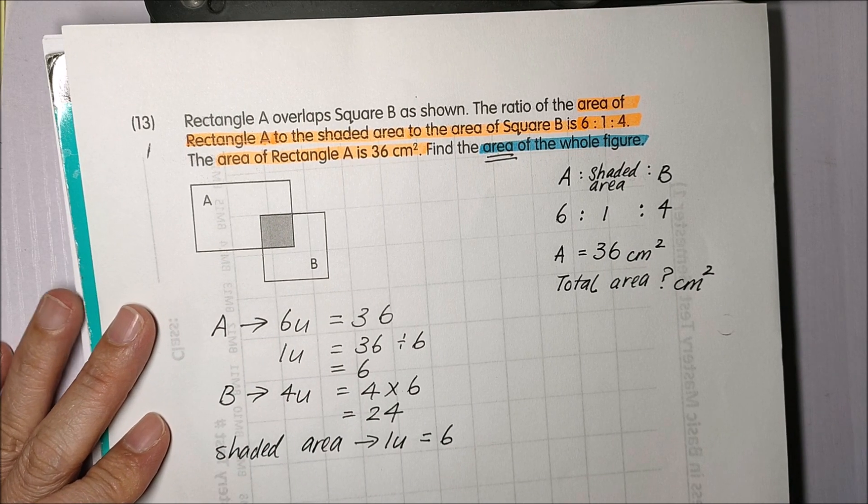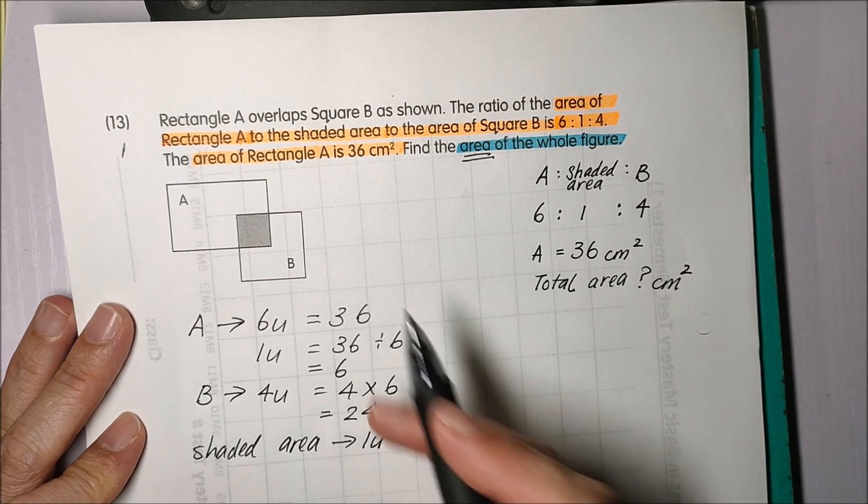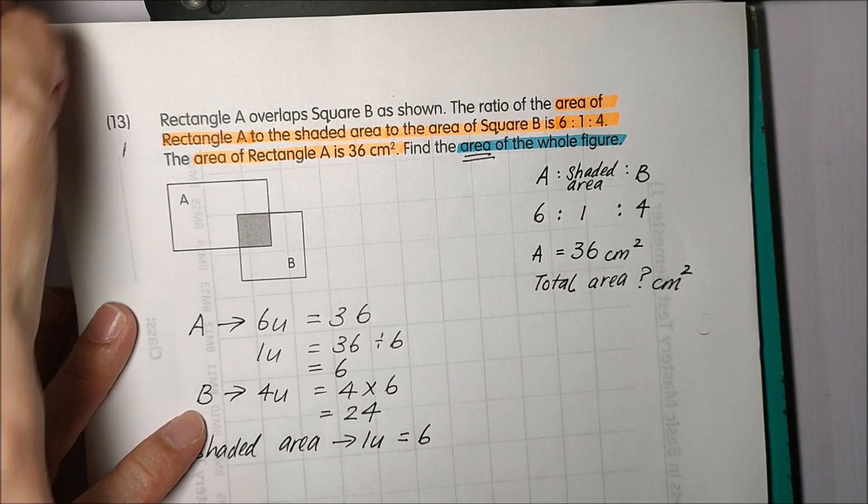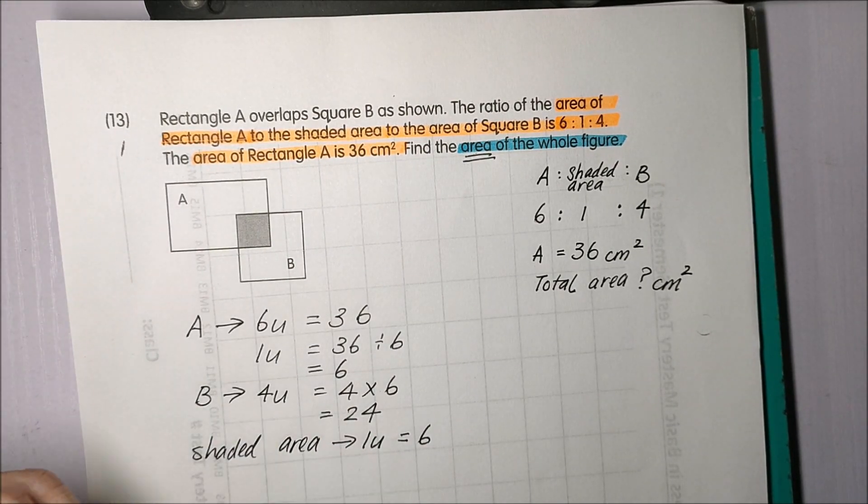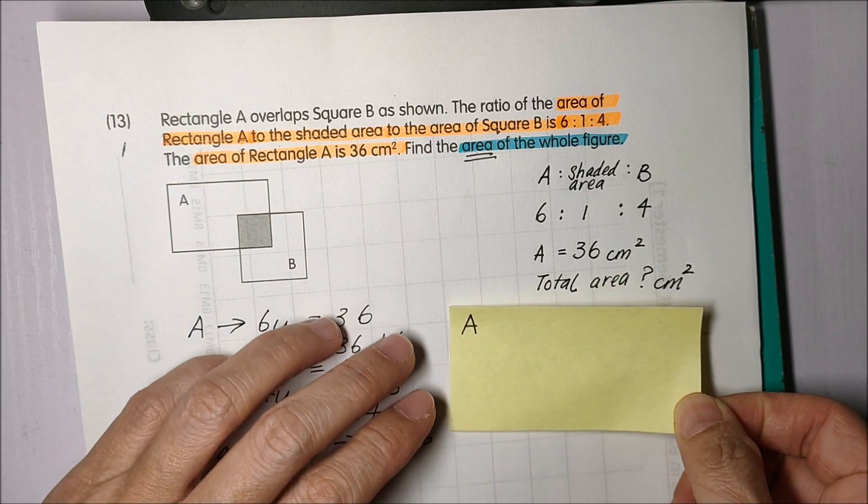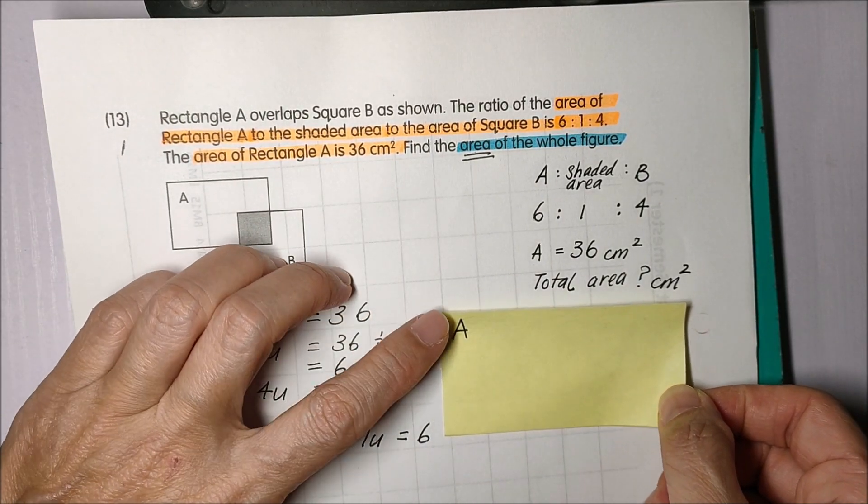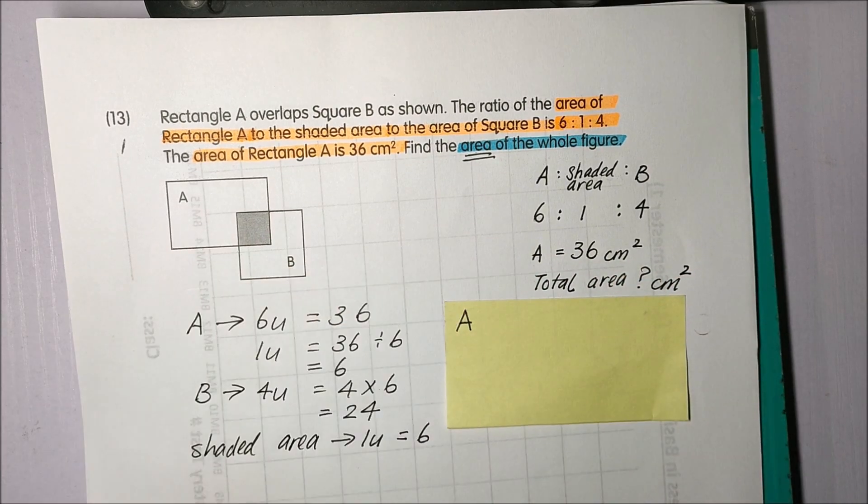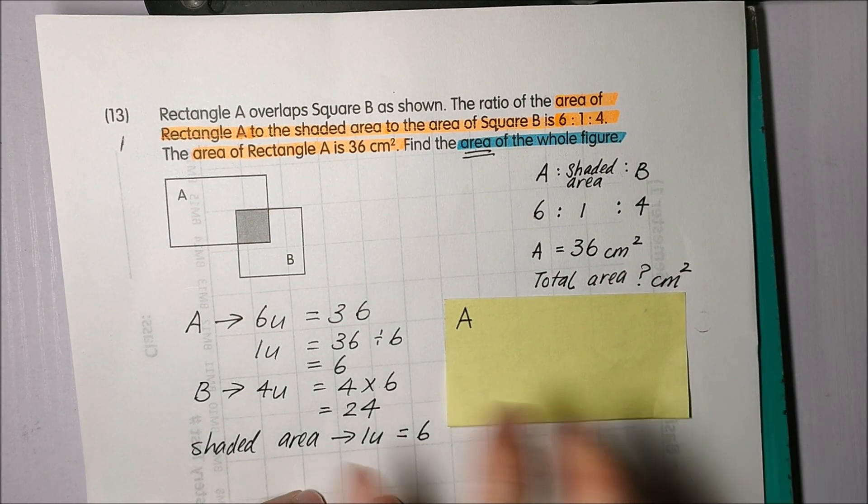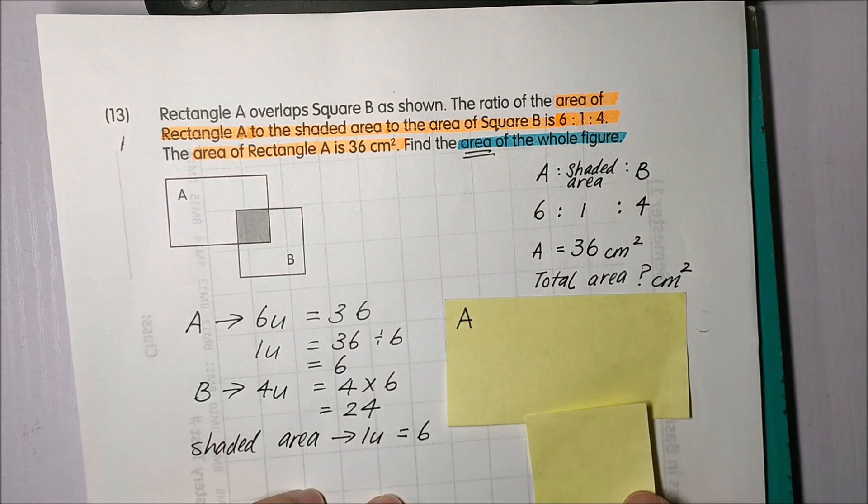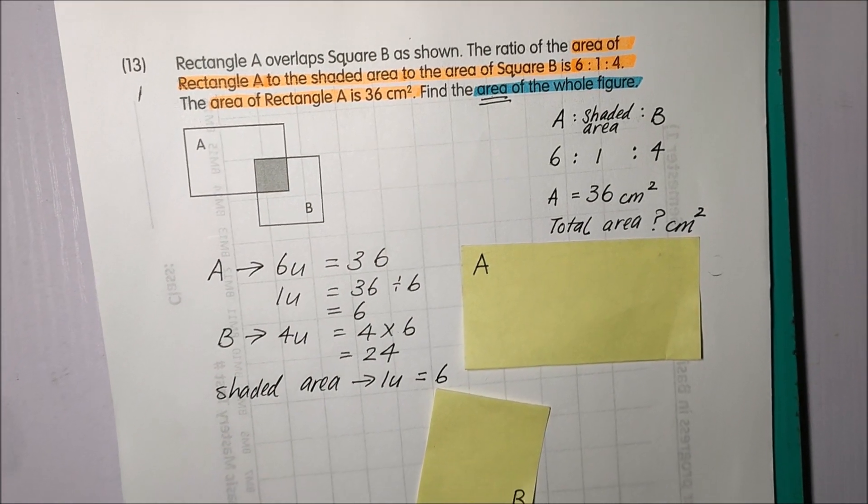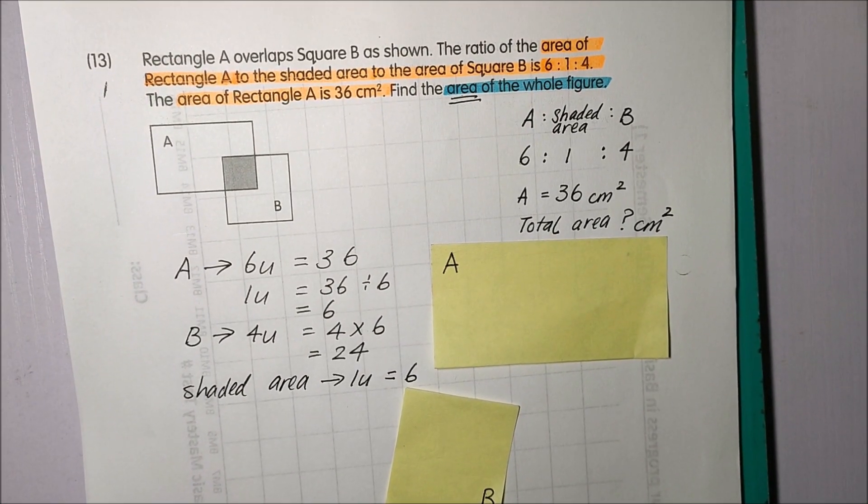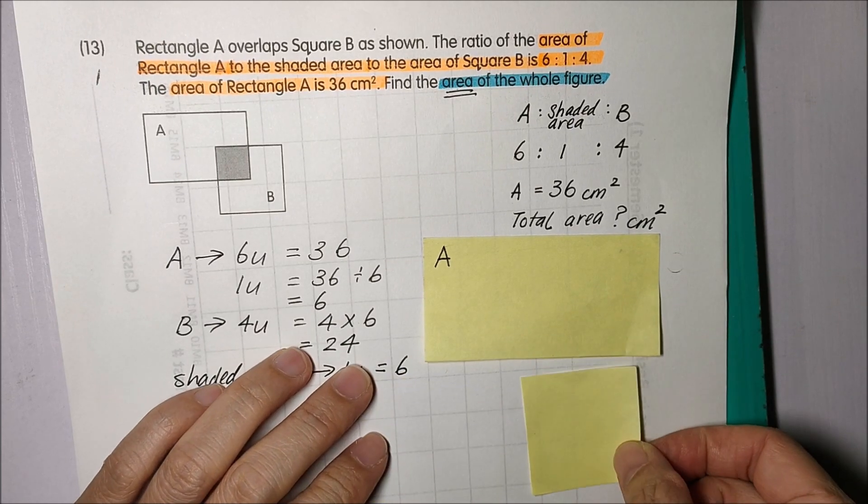So how do I find? It's a complicated figure with overlapping. So I'm going to show you from here. So this is my rectangle A. And I have a square B. I'm just going to tilt my paper a little. And this is my area B.